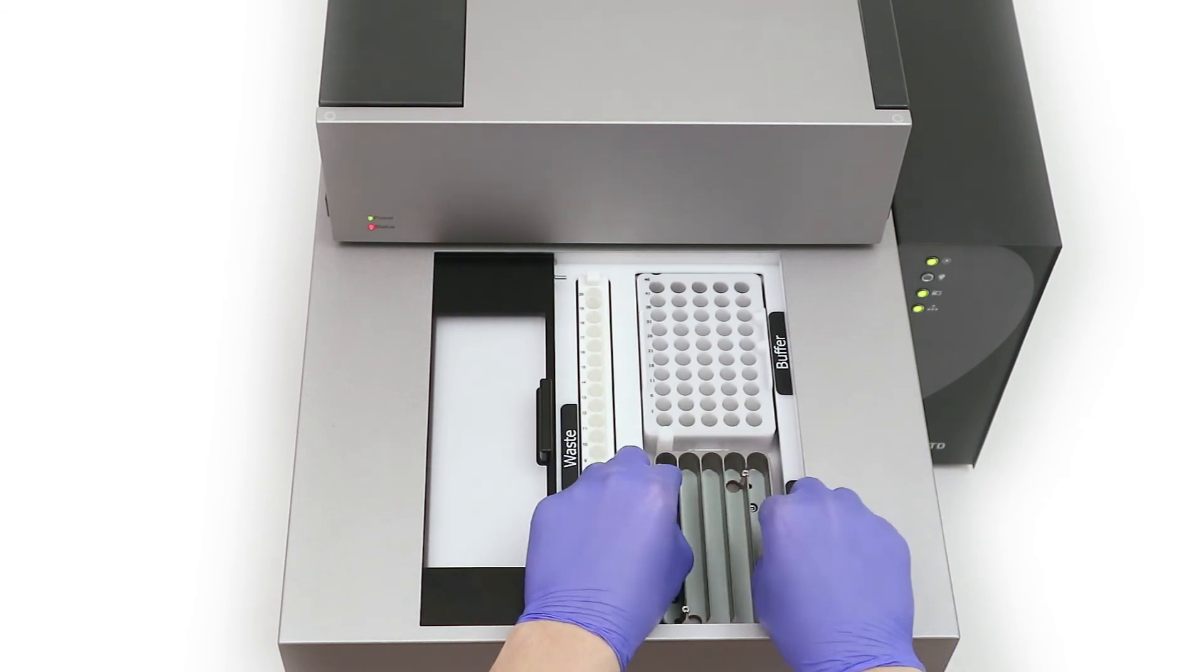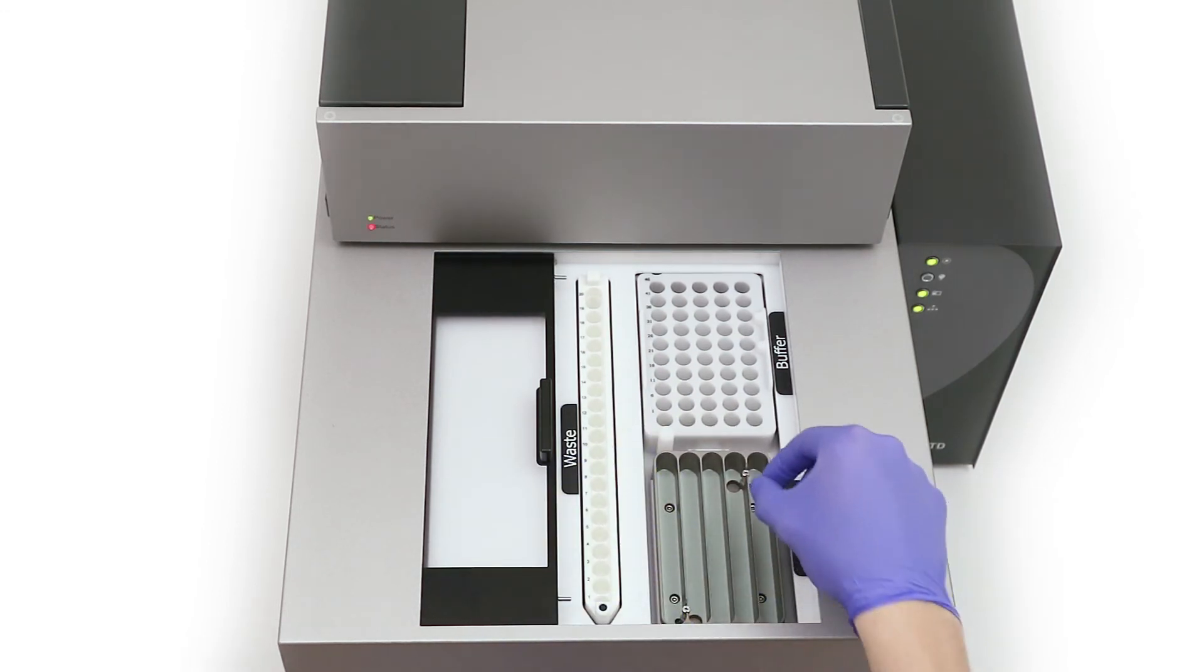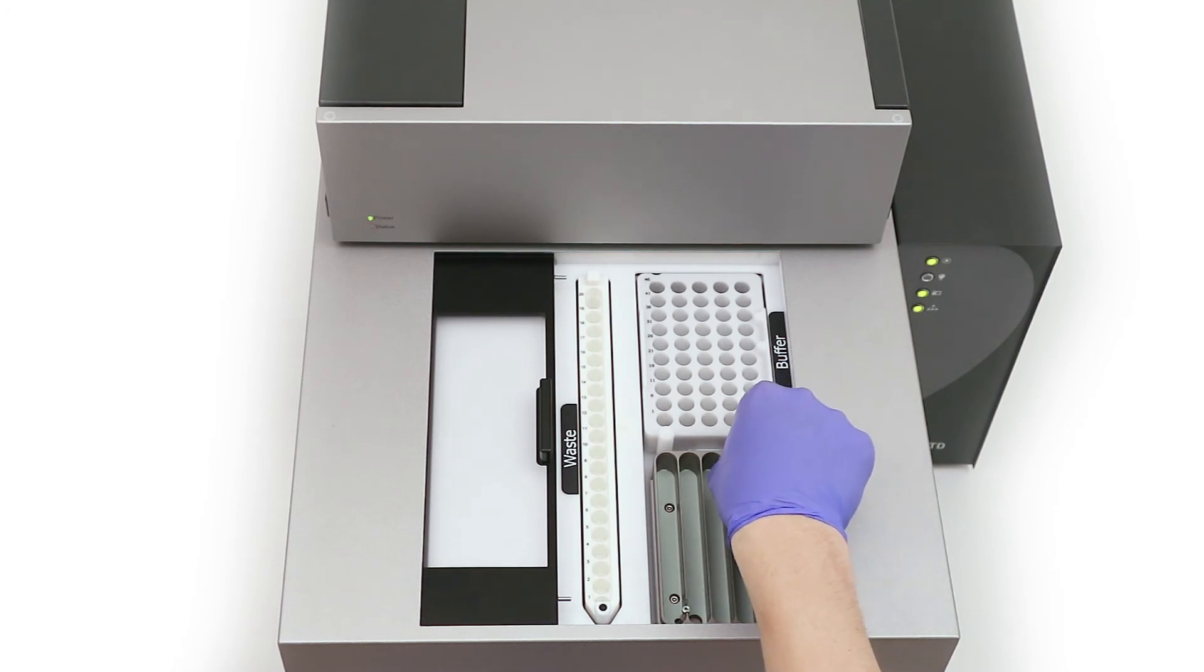Next, place the vial tray adapter into the autosampler. Push down on each of the screws and turn one quarter turn clockwise to secure the adapter in place.